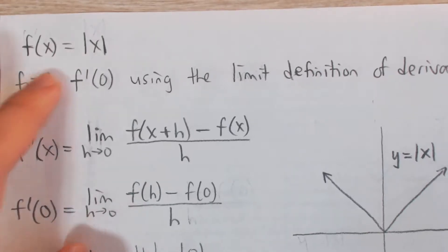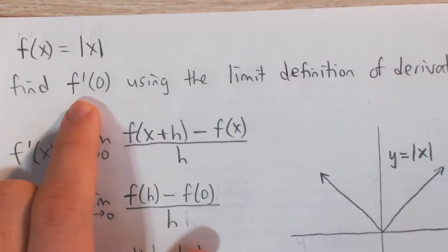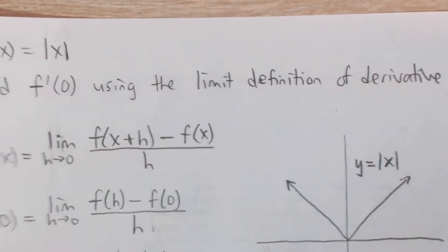Okay, so here we have f of x equals the absolute value of x, and we want to find the derivative of that function at x equals 0 using the limit definition of derivative.